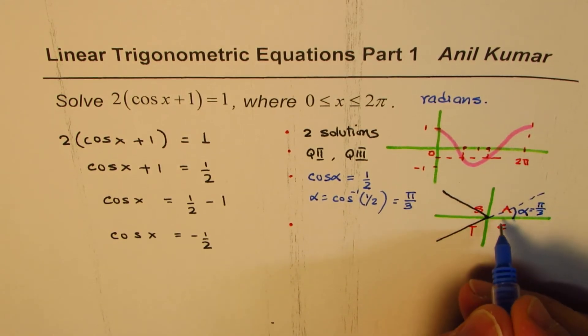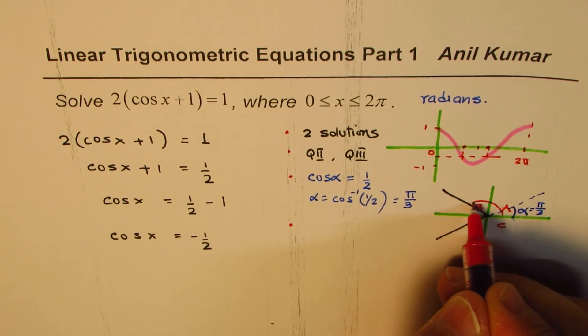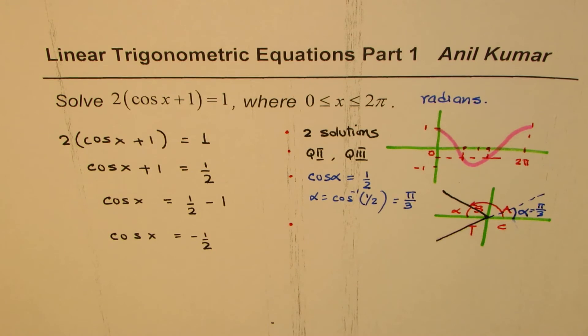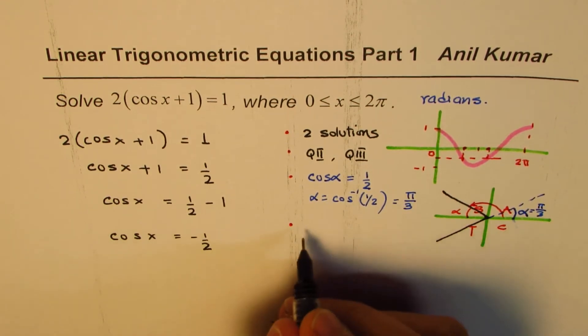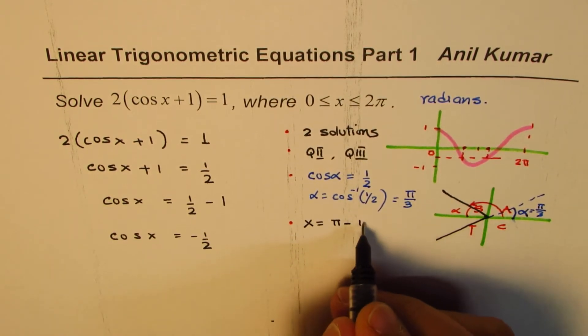Once we know the related acute angle, we can find both these solutions. One solution is this angle, which is α, so that is x = π - α. So one solution is x = π - α, which is π - π/3 for us.